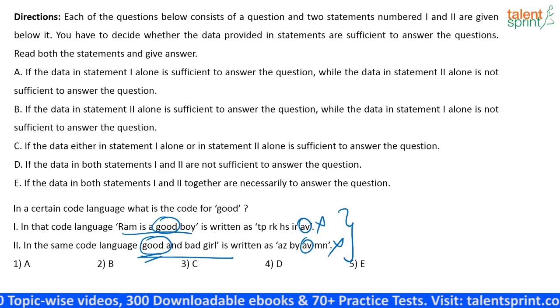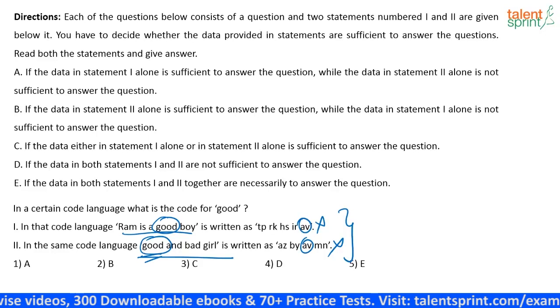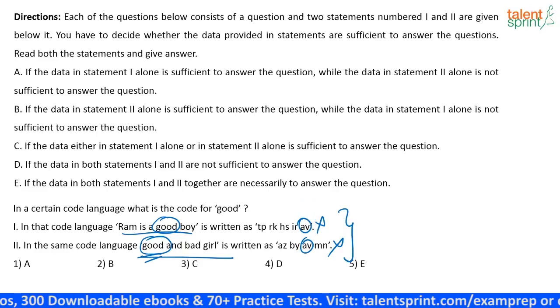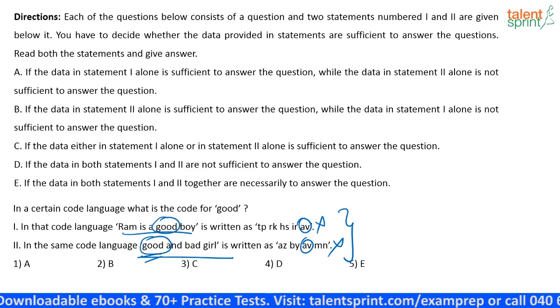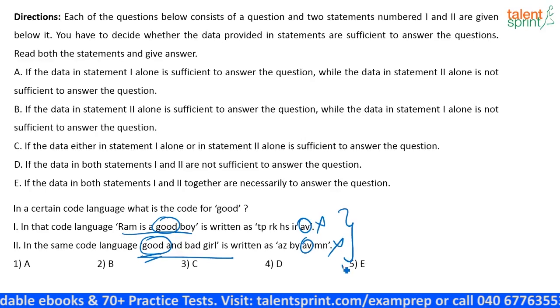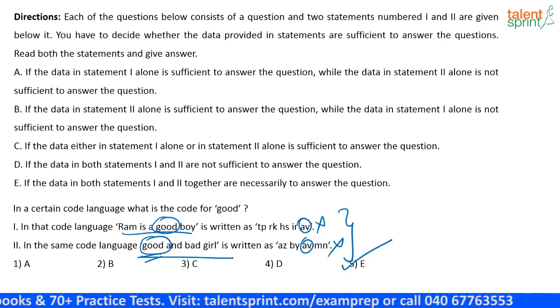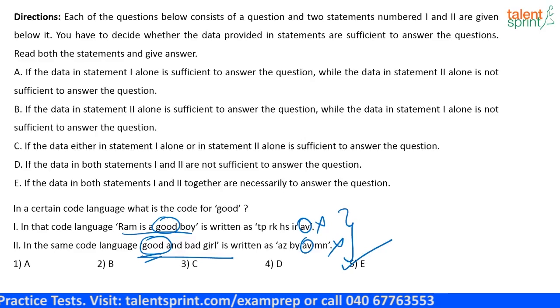You read and find all this. Just by reading, you should be able to say, I am just explaining it for the sake of explaining. But by comparing both the statements, you will get the code. So, directly you can mark the answer as option E, that is 5. That is, both the statements are required to arrive at the answer.